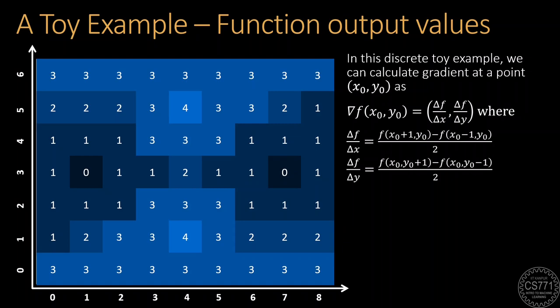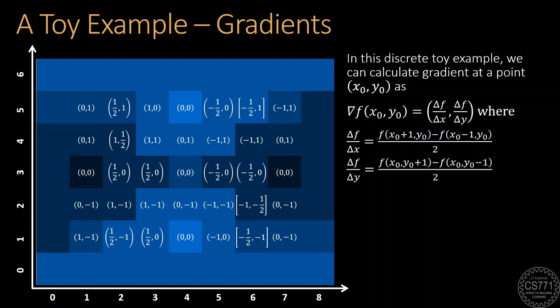To help you visualize the notions of partial derivatives and gradients better, here is a toy example of a real valued function over a discrete space. Light colors denote large function value, the peaks of the hills, and dark colors denote small function value, the depths of the gorges. The notions of partial derivatives have been modified suitably to work in discrete space. However, even in this toy example, we find that the peaks and the depths do offer zero gradient. There also seems to be a saddle point sitting in the middle of the grid.